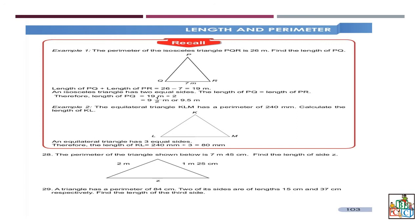Question 29: A triangle has a perimeter of 84 centimeters. Two of its sides are of length 15 and 37 centimeters respectively. Find the length of the third side. I'm not going to explain — you already know how to work out and find the answer. These will be in your copybook.